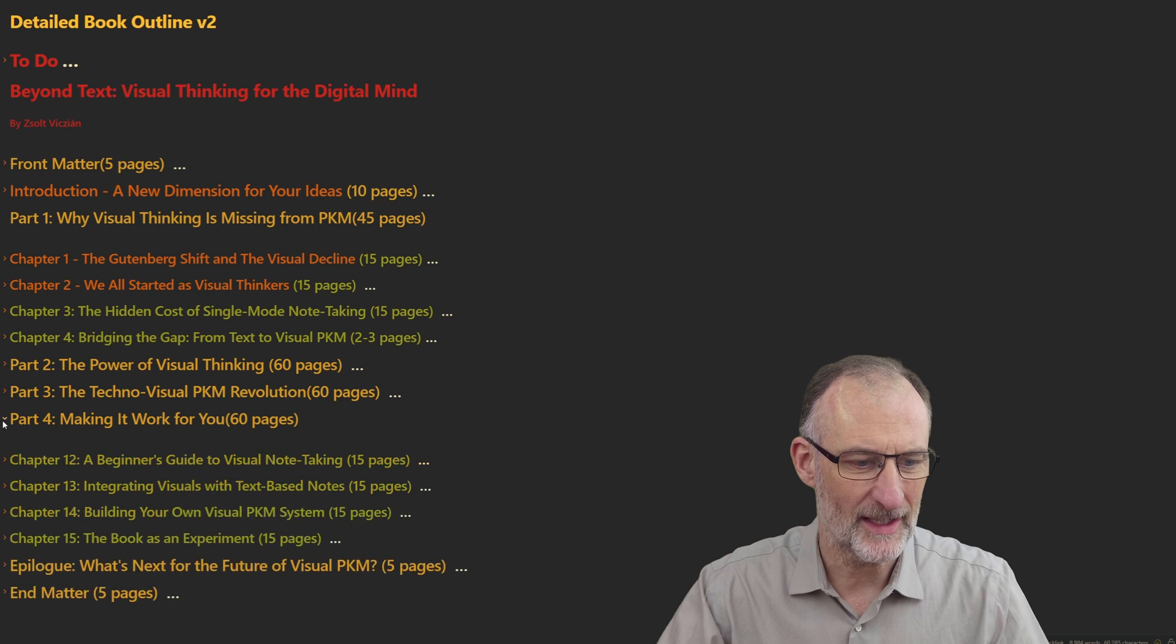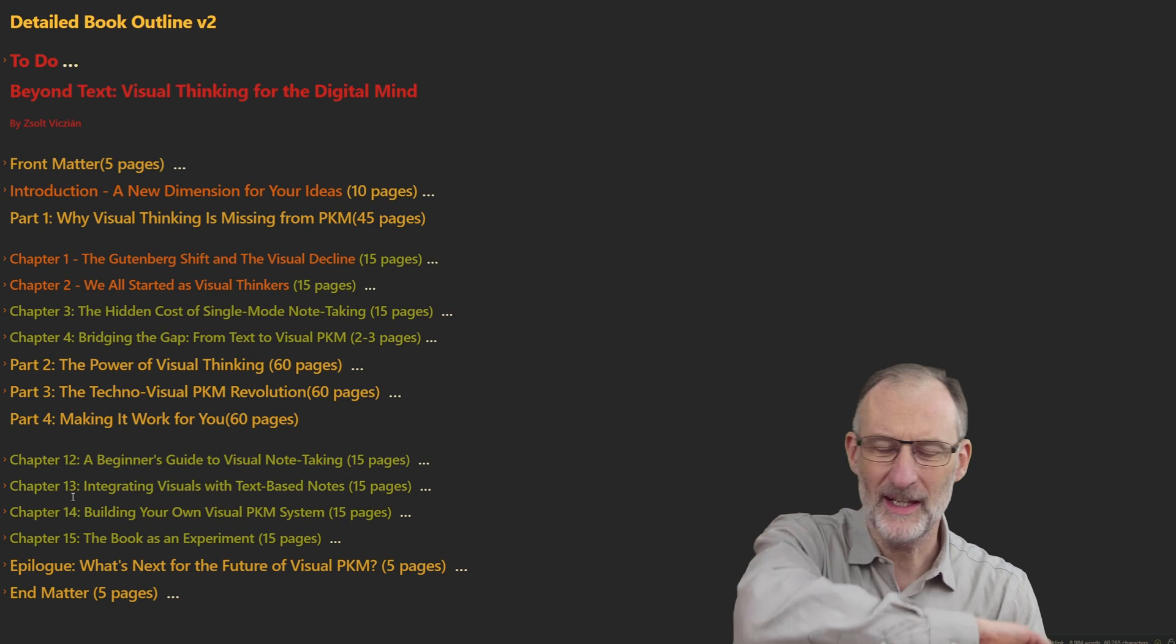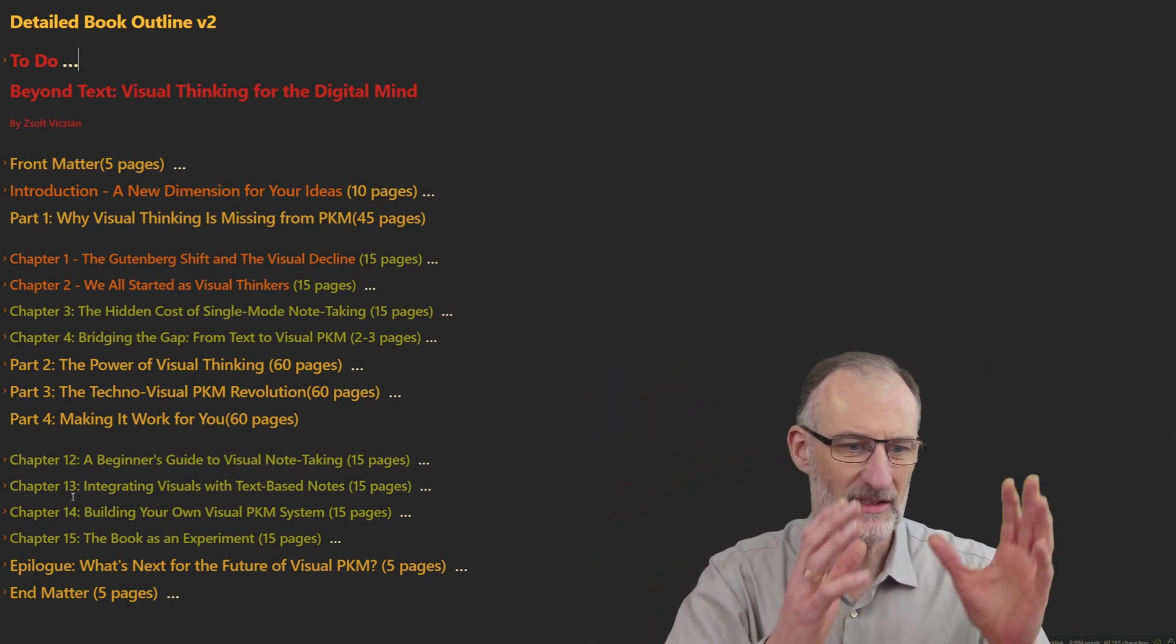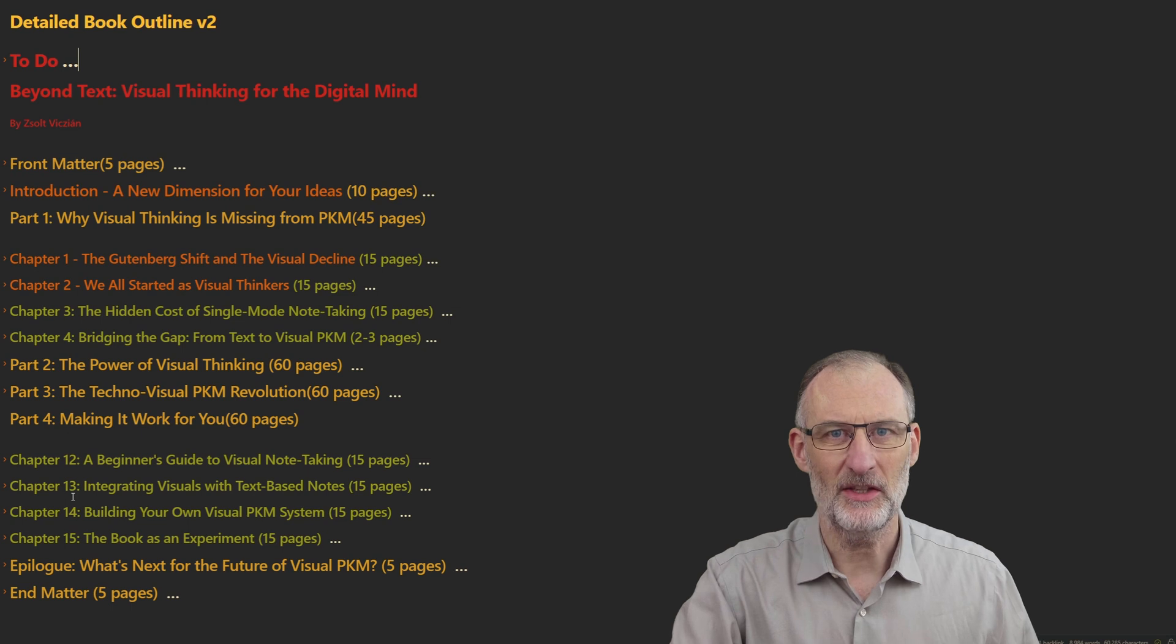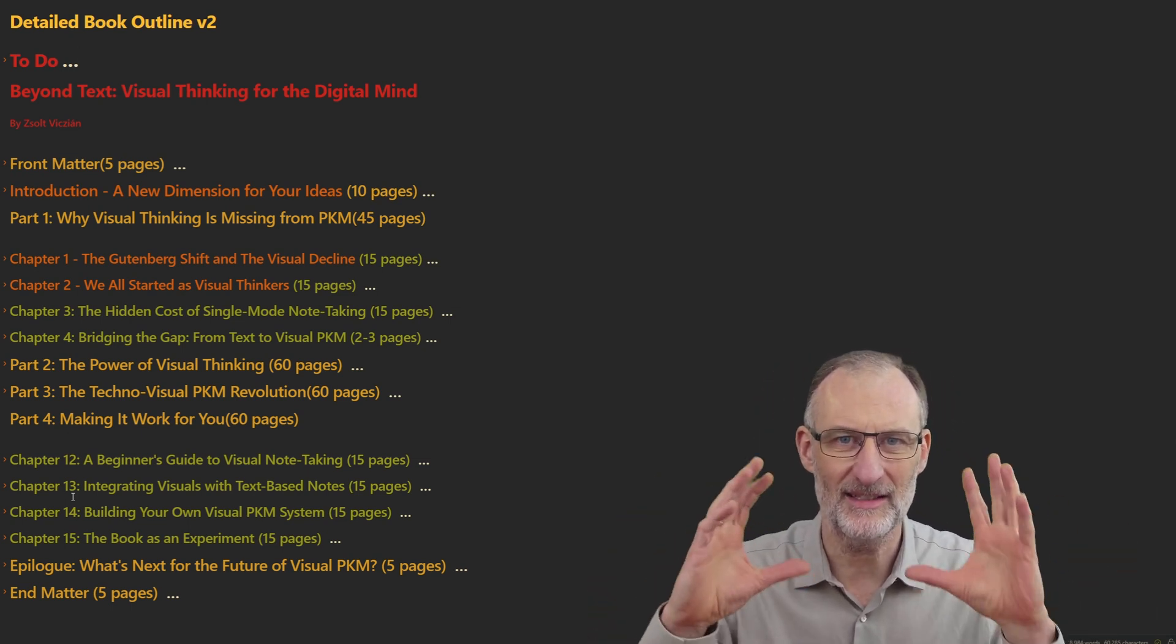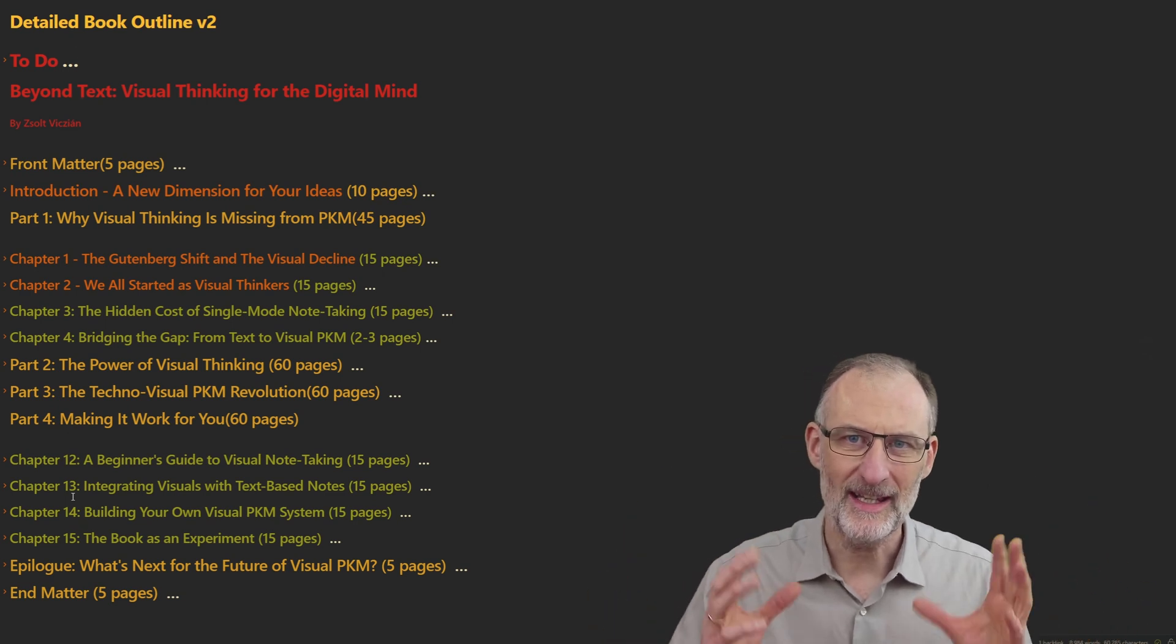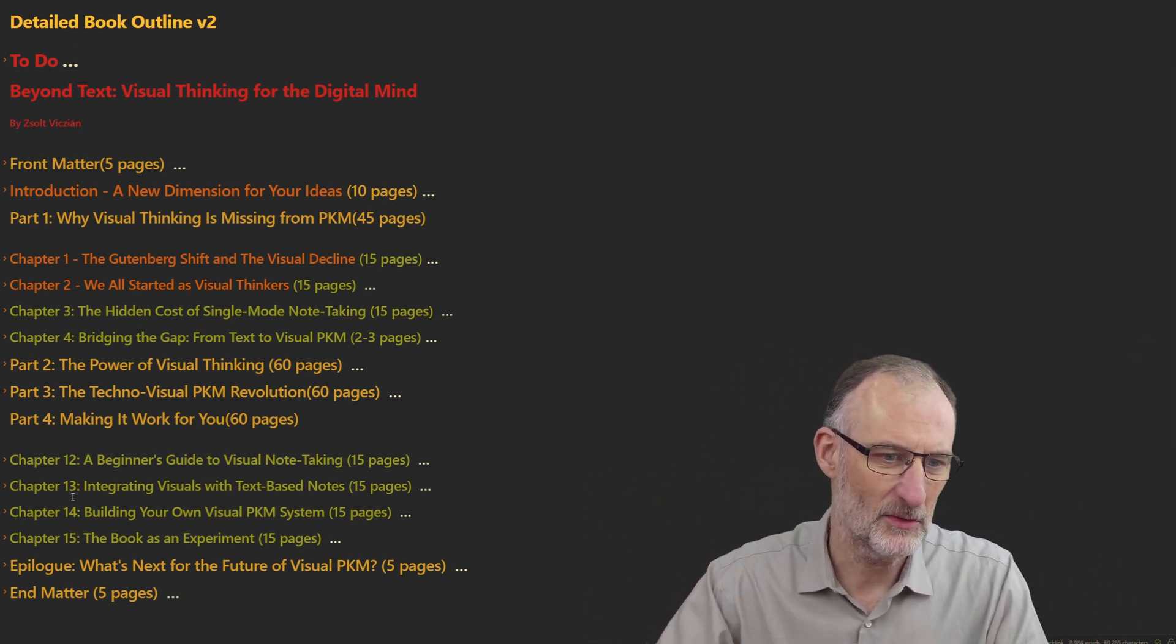There are altogether at the moment 15 chapters in the book, so it's a pretty long book, and it has this arc starting from understanding why we're in the situation we are in, giving you a bit of cognitive science and some learning history, as well as then offering a solution.